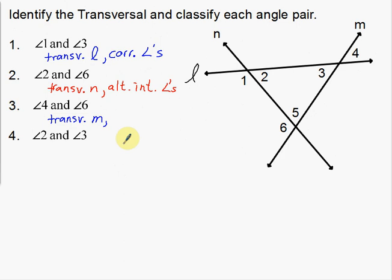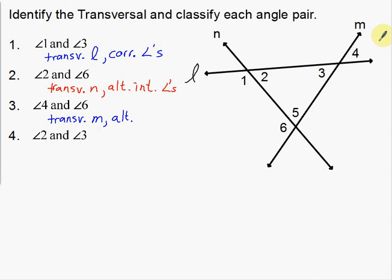It's either going to be alternate interior, alternate exterior, corresponding, or same side interior. To get from six to four I have to cross over the transversal, so it's going to be alternating. Now are these angles inside or outside? Angles four and six are on the outside of the intersections — line L and line N put five and three on the inside, but six and four are on the outside. So this is alternate exterior angles.